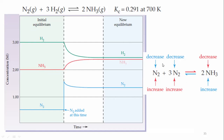Let me explain another way. Looking at these values — shown in red and blue — when the concentration of nitrogen increases, there is more stress on the reactant side. The direction proceeds towards the forward reaction and the concentration of ammonia increases.